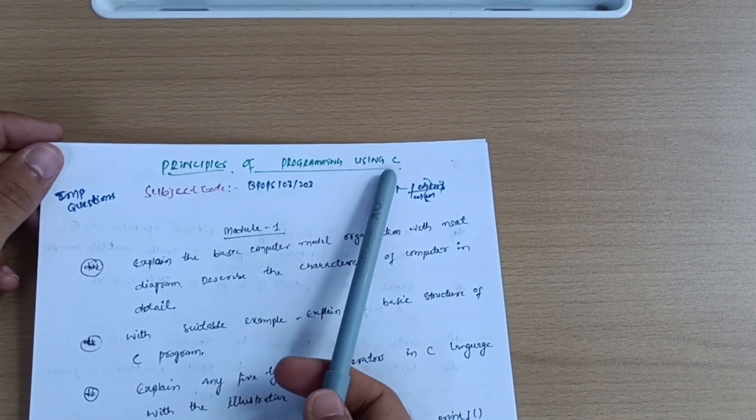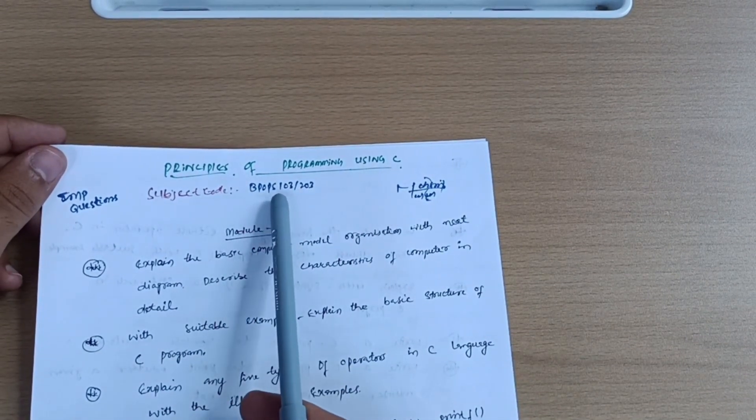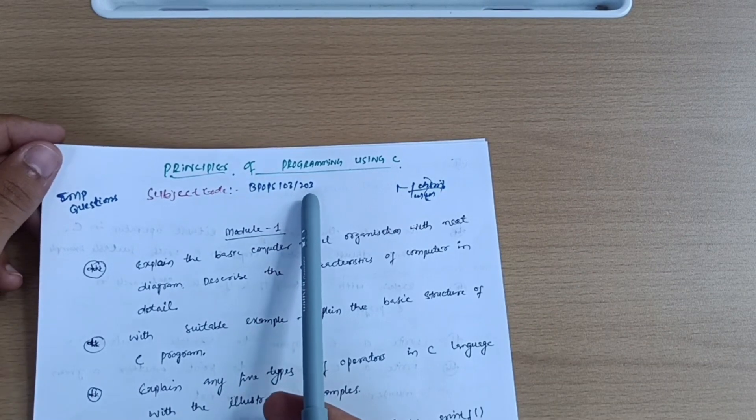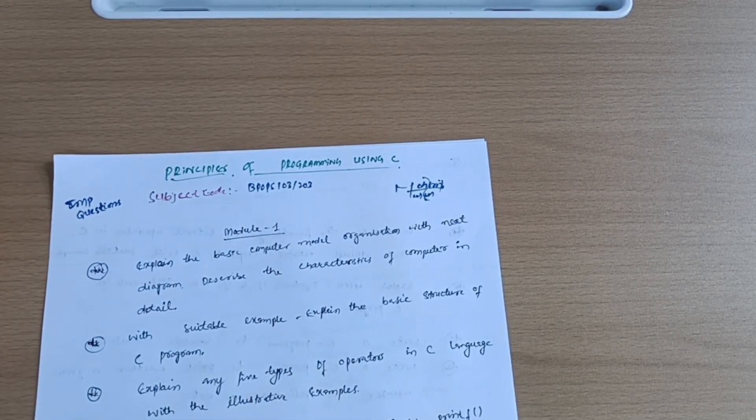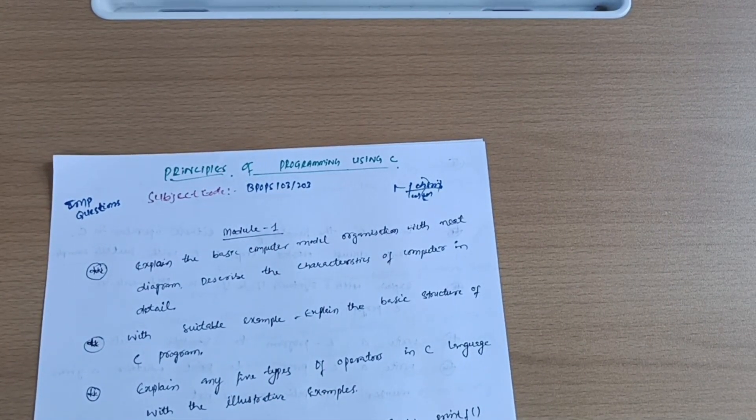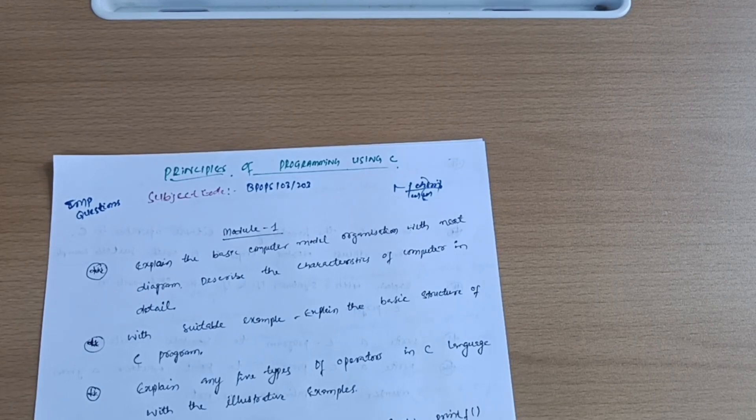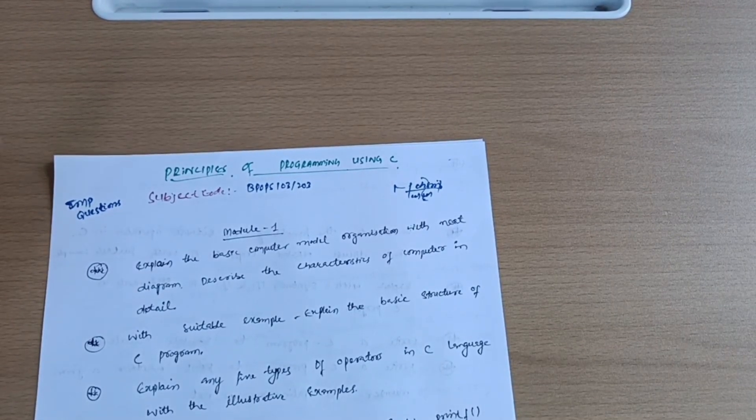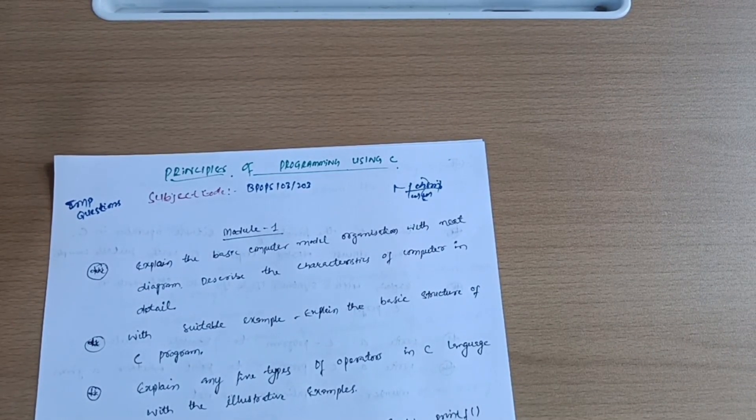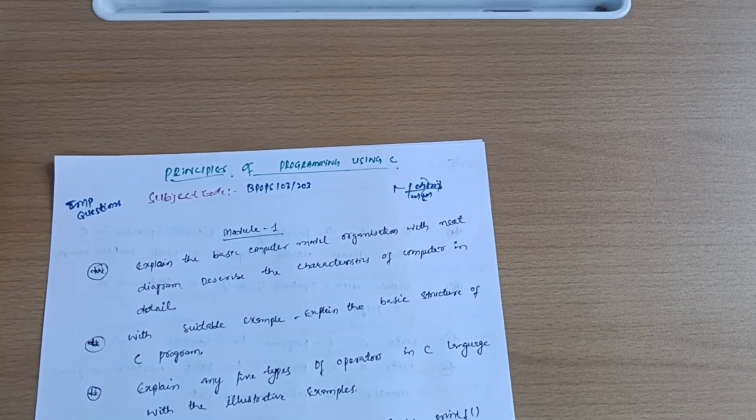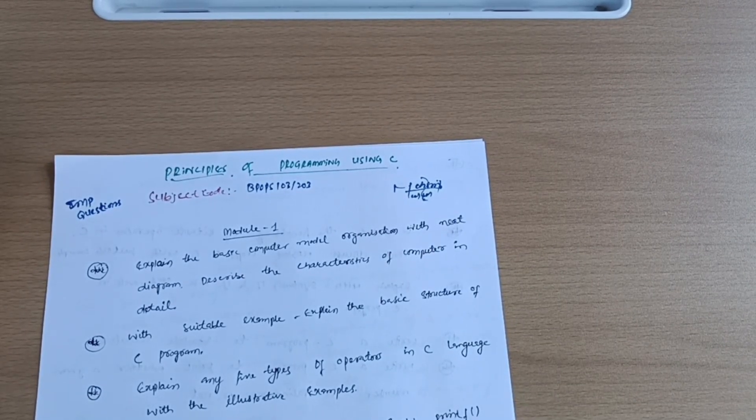Today we will discuss the super important questions of the Principles of Programming using C subject. Subject code is BPOPS103 or 203. I have told you in most of my videos that if somebody wants to pass, you should go through three modules fully. You should not neglect any topic from those three modules.